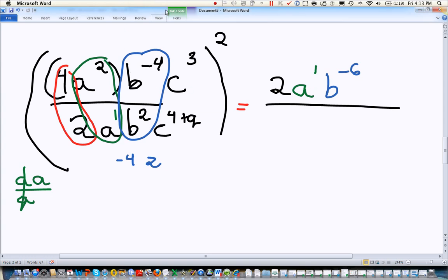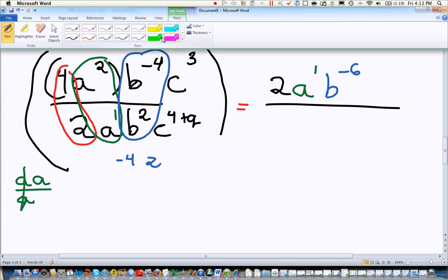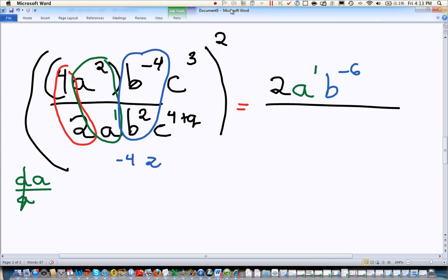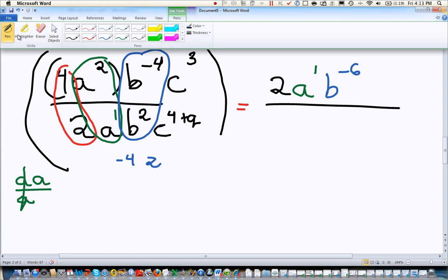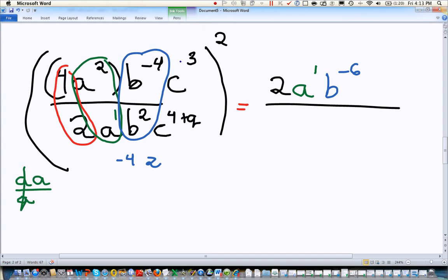The C's are an interesting problem here. We've got an interesting little conundrum going on with this letter C. Because in the bottom, we have an expression. We have that 4 plus Q in the bottom. So what I'm going to do is write down underneath here what I'm doing. I'm going to take the 3 and I'm going to subtract 4 plus Q.